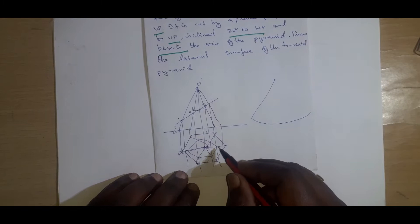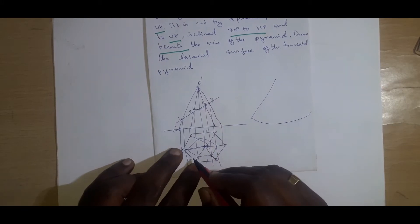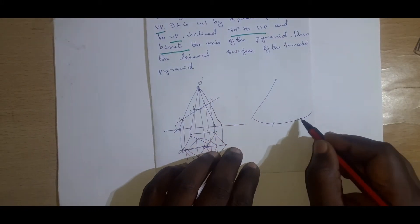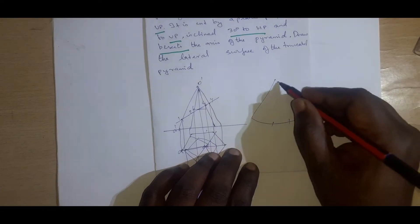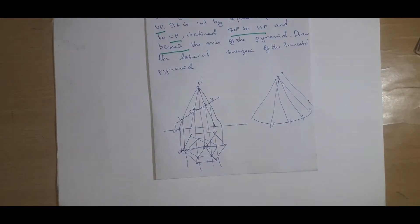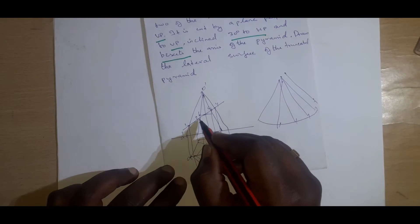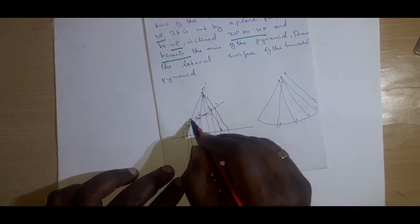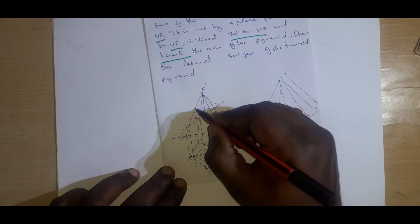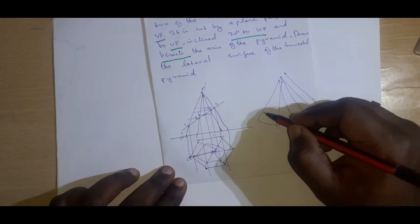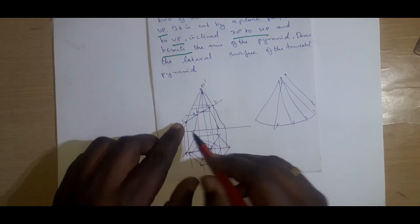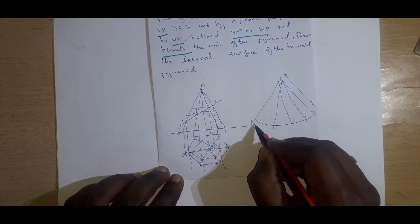Since it has 6 sides, each side will be 30mm. Take a compass set to 30mm and mark off all six sides. Since this is the true length, we can draw everything here. Each slant length can be drawn, and the shortest height is taken first.